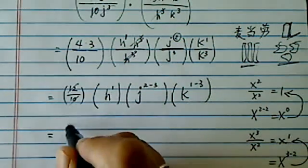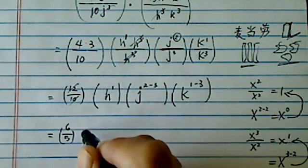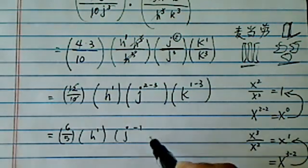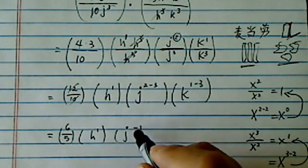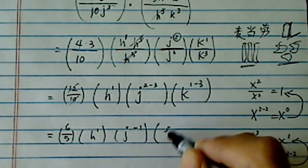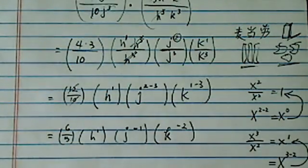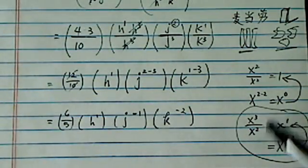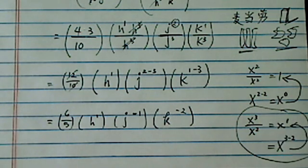Let's simplify. Over here, I have six over five, H to the one, J to the minus one. We'll deal with the minus sign in a little bit. So K to the minus two. One rule here is if it's multiplication, you add exponents; division, you subtract.